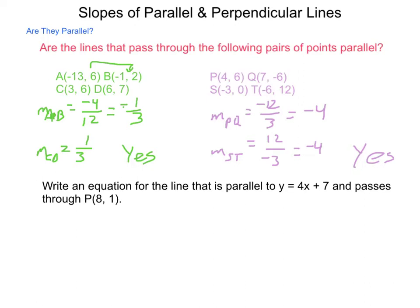Write the equation of a line that is parallel to y = 4x + 7 and passes through the point P(8, 1). Because this information is given, all we know of our new line is its slope and one point on that line.